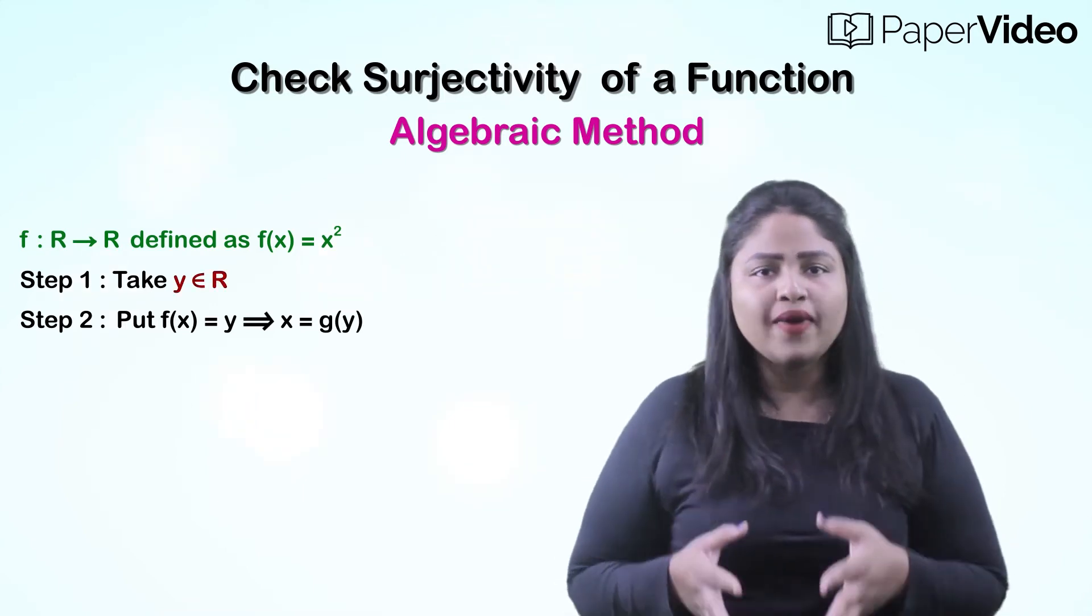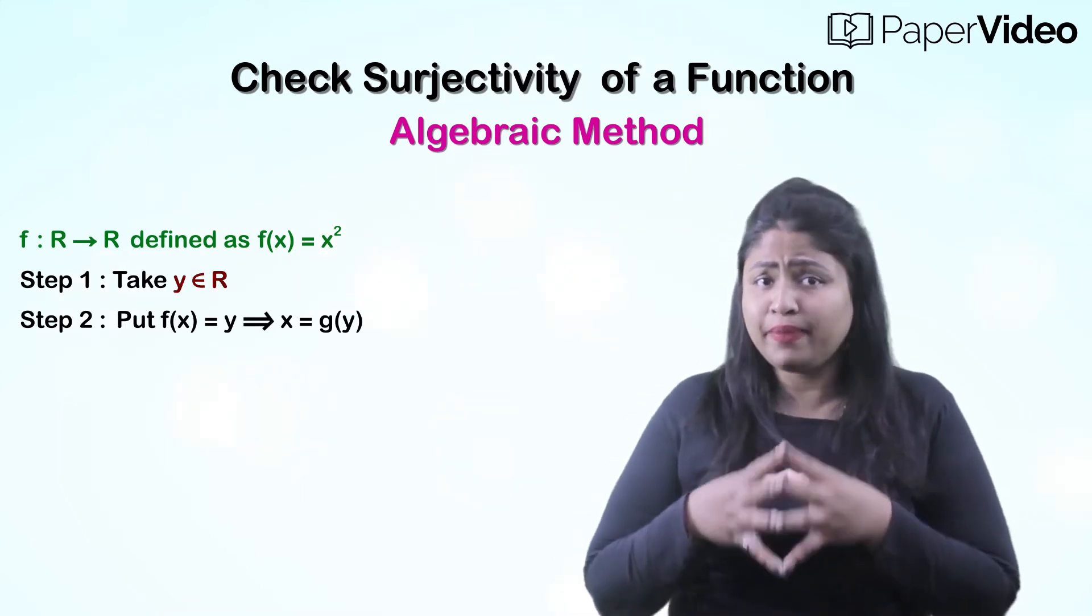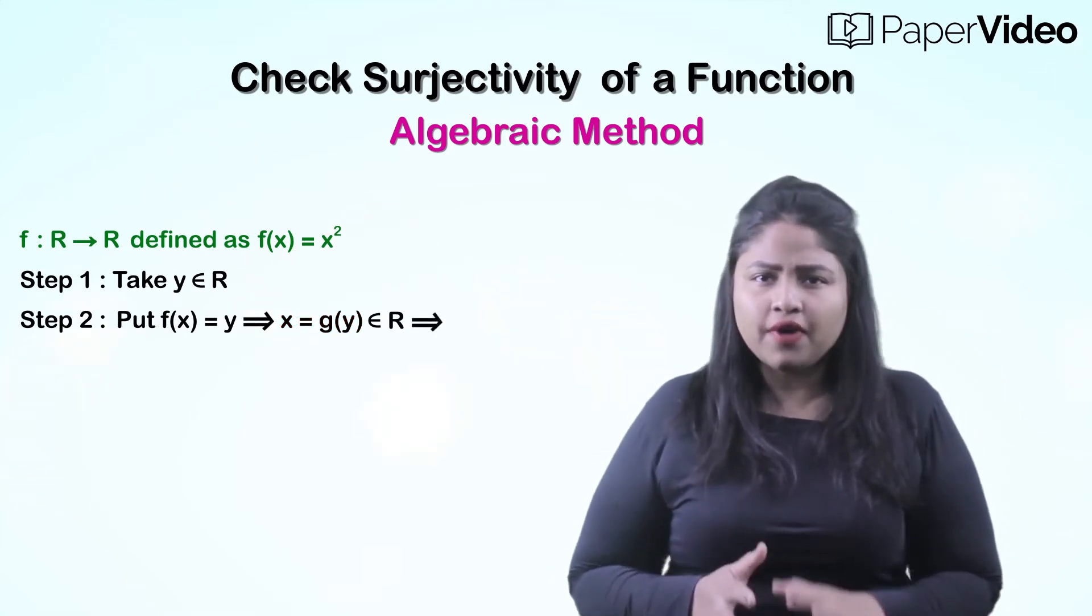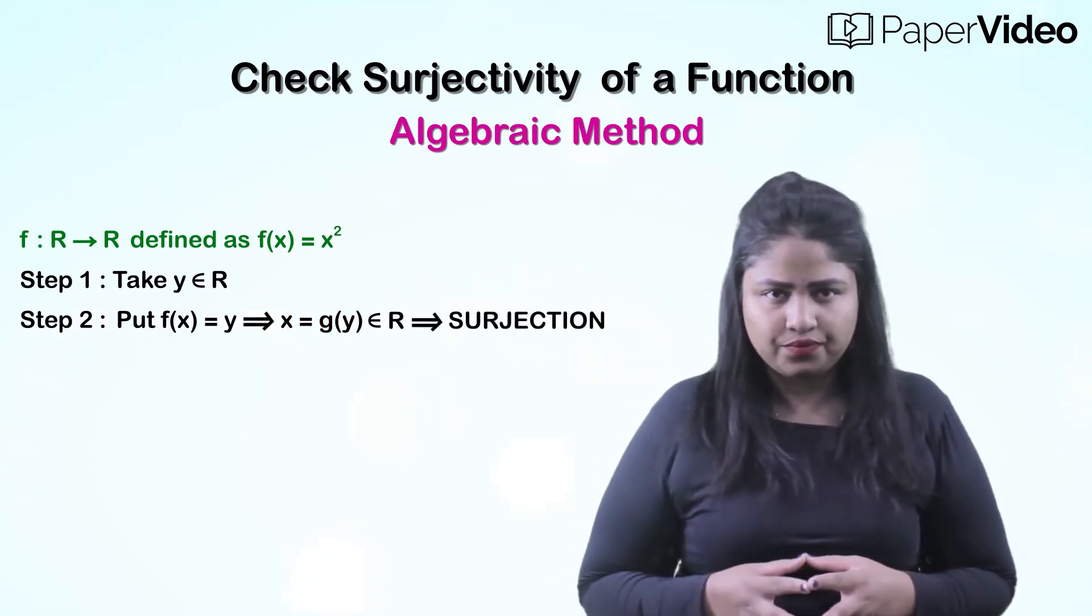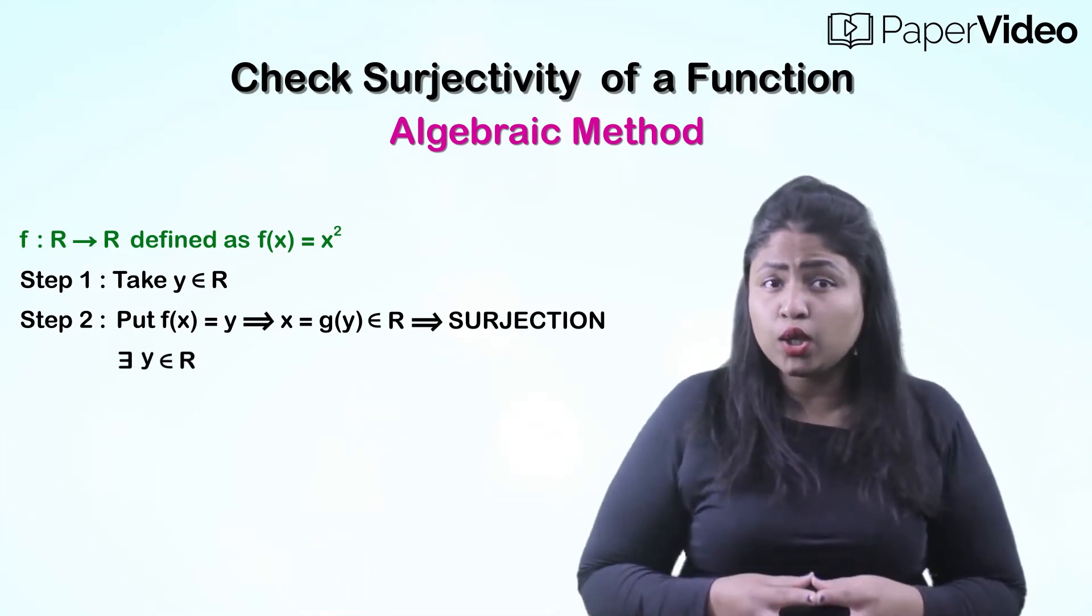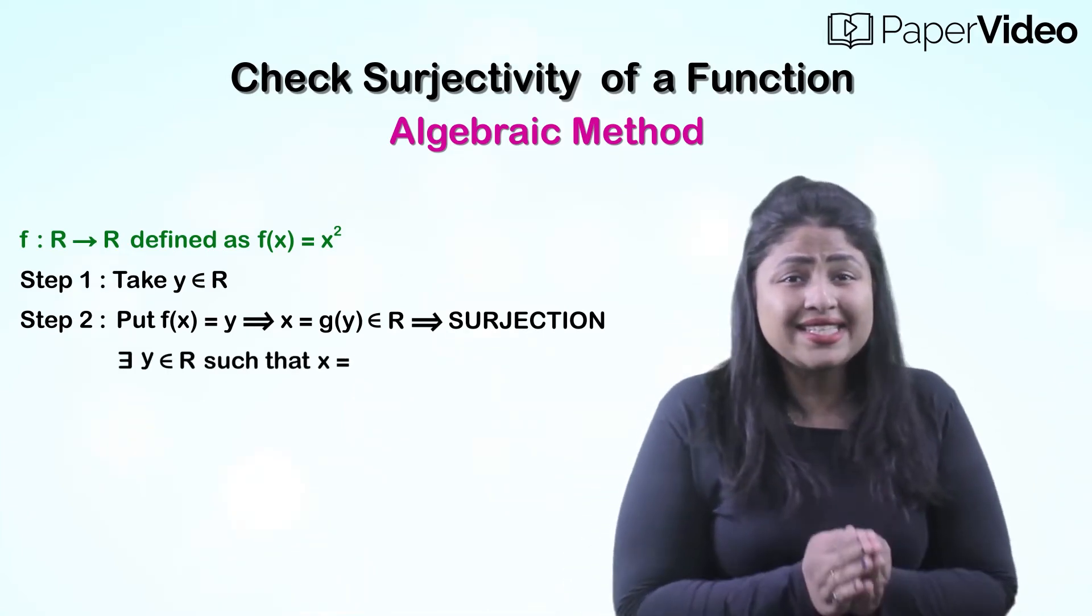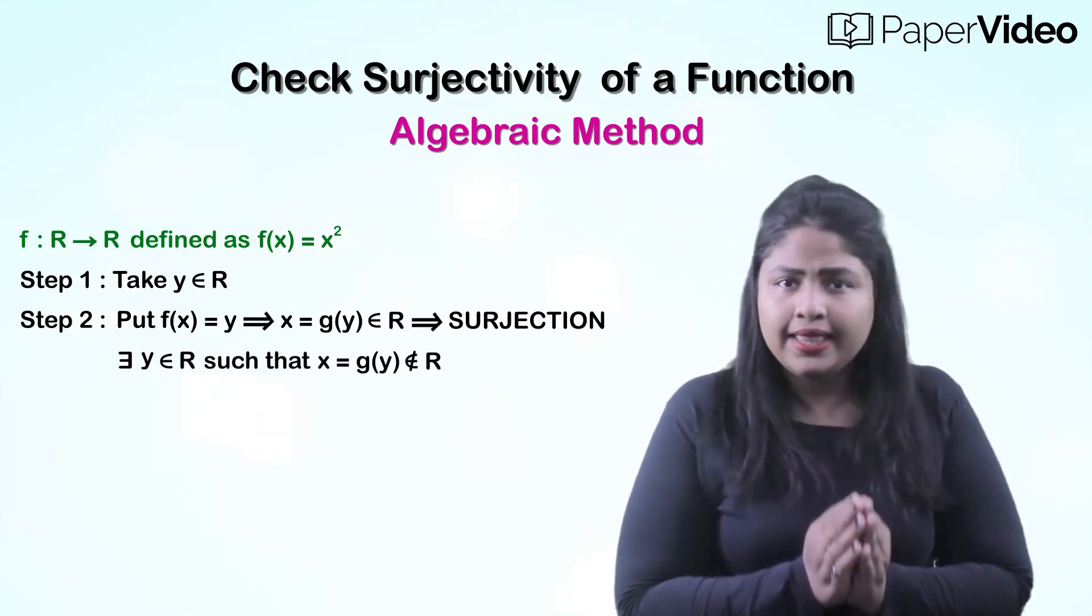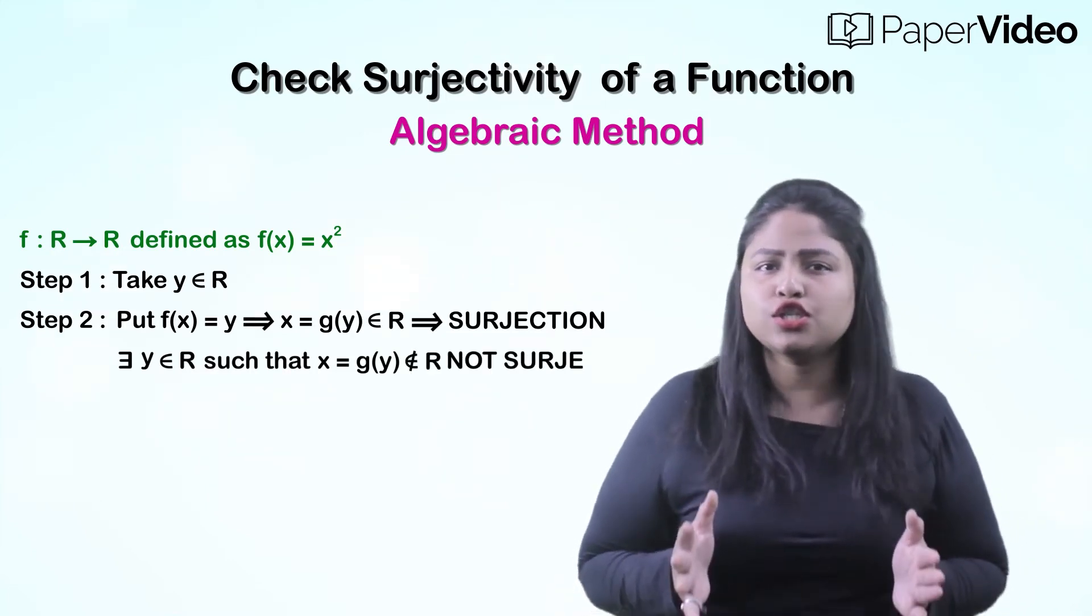If for all values of y belonging to set B, x equals to g(y) belongs to set A, then the given function is a surjection. If there are some y belonging to set B for which x equals to g(y) does not belong to set A, then the given function is not a surjection.